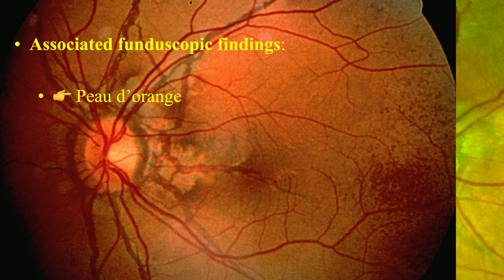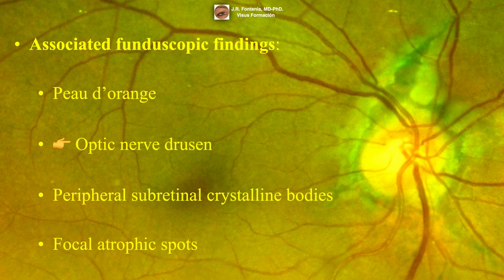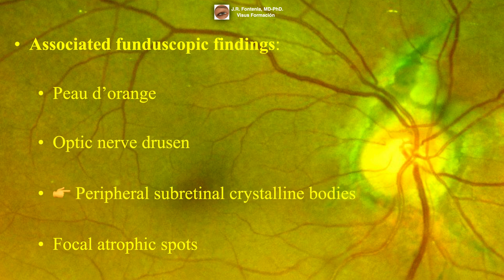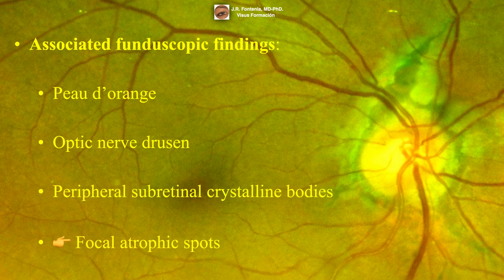Associated ophthalmoscopic findings may include the peau d'orange pattern, which is a diffuse mottling of the retinal pigment epithelium usually located in the temporal mid-periphery, as well as optic nerve drusen, peripheral subretinal crystalline bodies, and focal atrophic spots.